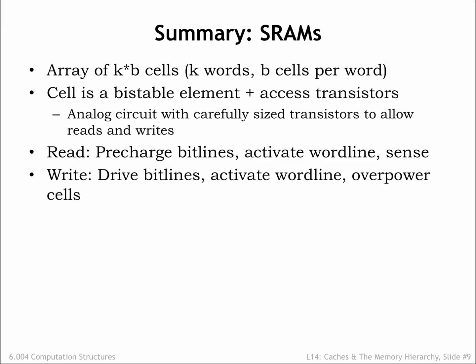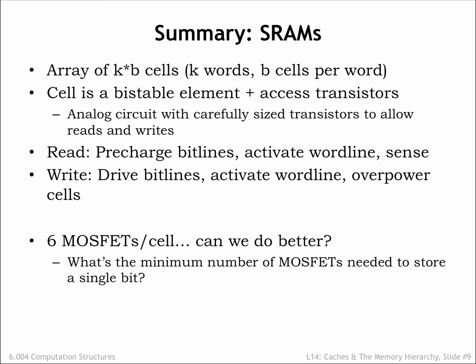In summary, the circuitry for the SRAM is organized as an array of bit cells, with one row for each memory location and one column for each bit in a location. Each bit is stored by two inverters connected to form a bistable storage element. Reads and writes are essentially analog operations performed via the bit lines and access FETs. The SRAM uses 6 MOSFETs for each bit cell. Can we do better? What's the minimum number of MOSFETs needed to store a single bit of information?